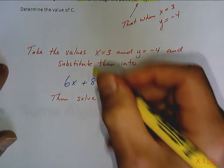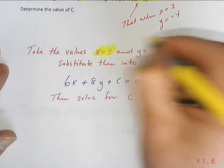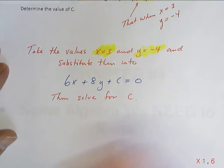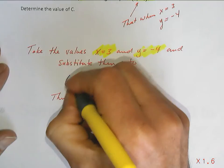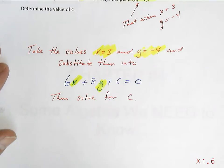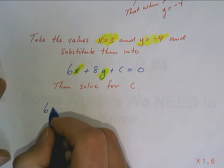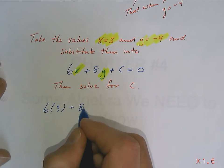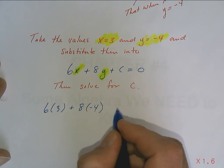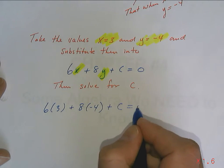So what I'm going to do is I'm going to take this value, x equals 3, I'm going to take this value, y equals negative 4, and I'm going to plug it in for x and plug it in for y. So I'm going to get 6 times 3 plus 8 times negative 4 plus c equals 0.